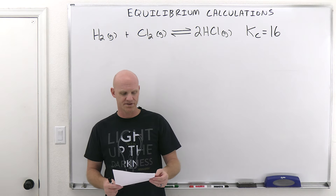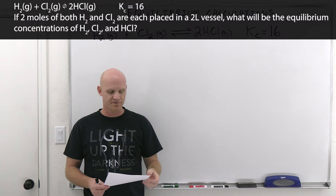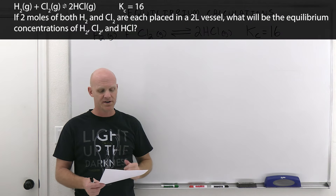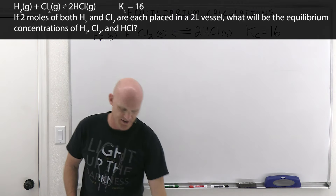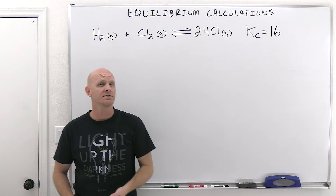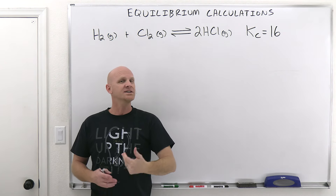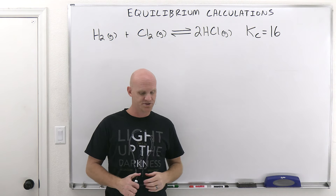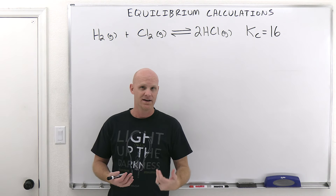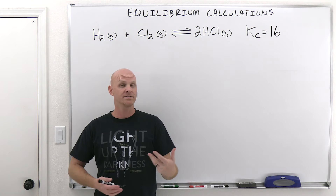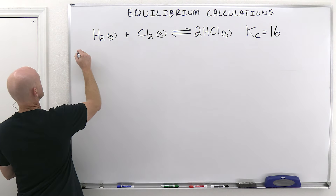In this next question, we're dealing with the reaction of H2 and Cl2 to produce HCl. It says if two moles of both H2 and Cl2 are each placed in a two-liter vessel, what will be the equilibrium concentrations of H2, Cl2, and HCl? We're being asked for equilibrium concentrations. The word 'initial' isn't used, but we've initially placed two moles of both H2 and Cl2 in a two-liter container. That's our initial condition, and this is going to be the key to knowing when you need to do an ICE table. We'll set up what is known as an ICE table.